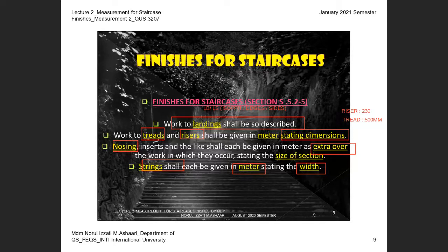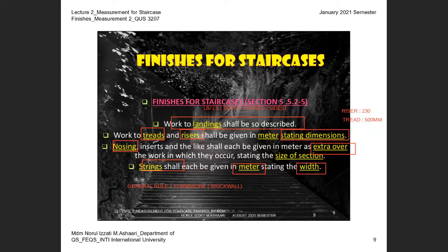For the tread, for example, 400 mm in horizontal. The clause also highlights nosing — measured as extra over. The string shall be given in metres stating the width. General rule: quantity can be taken from your formwork, provided you consider the deduction for brick wall dimensions. If there is a brick wall attached to the staircase, you must deduct the brick wall thickness from your measurement.